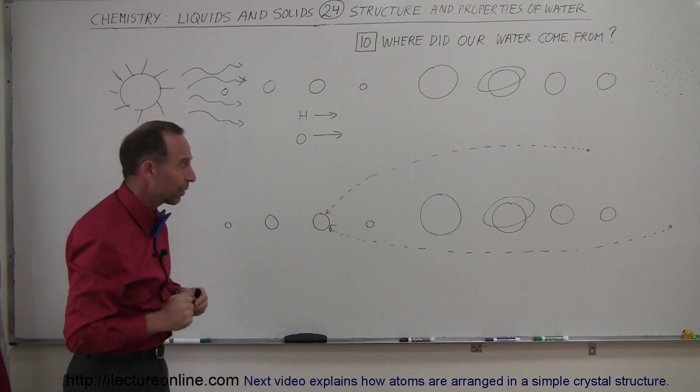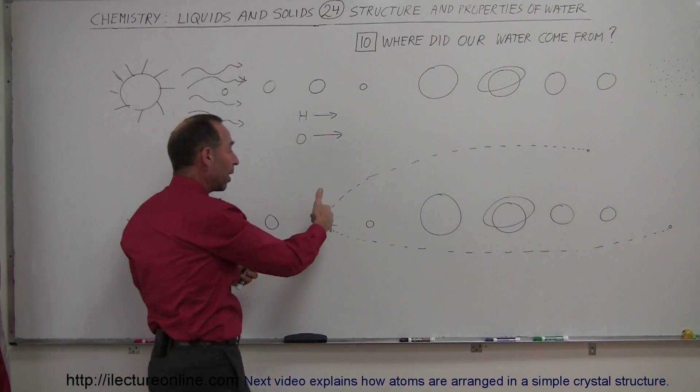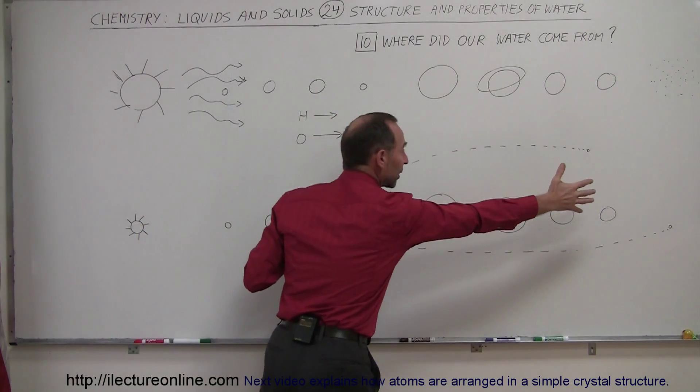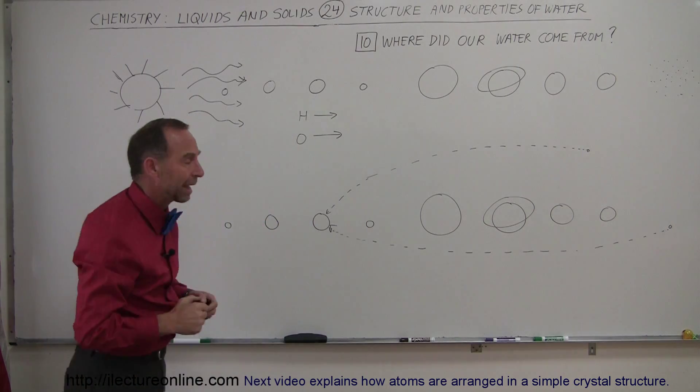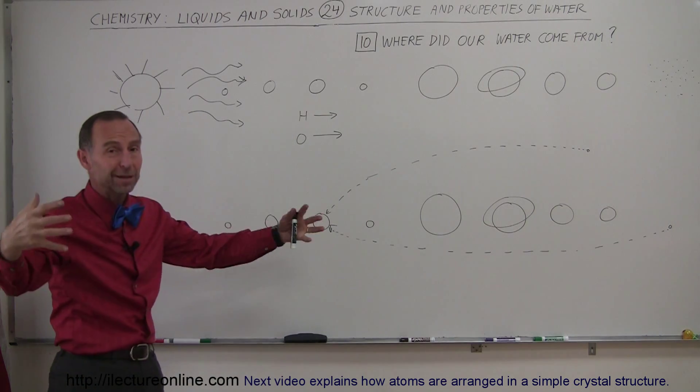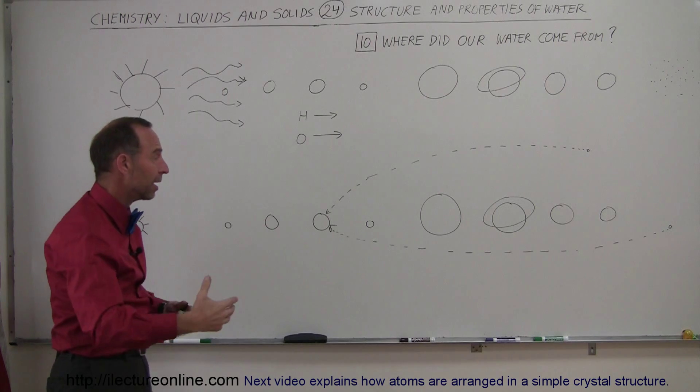But the ones on the Earth are the ones we're interested in. And so yes, the water was redeposited from the outer regions of the solar system back onto the planets, including the Earth, by these comet impacts. Each time a comet, which is basically a big dirty snowball or a big icy body, would come in, slam into the Earth and deposit water.